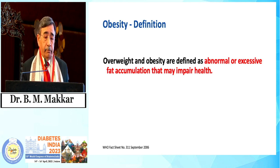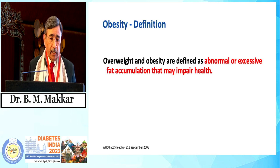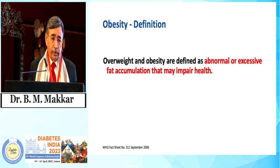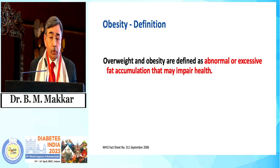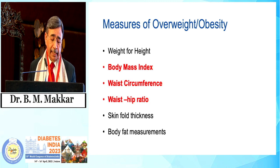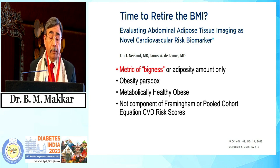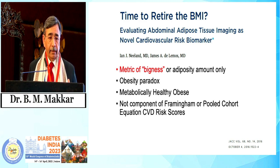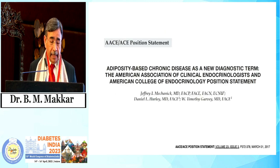Obesity is basically looked upon as increased body weight, but it is defined as abnormal excessive accumulation of fat in the body to an extent that it impairs health. So it is fat accumulation — it is not just body weight. We are measuring body mass index and body weight, and these are usually surrogate measures which are looking at fat. But BMI, by definition, is a metric of bigness — the total amount of weight — which is an indirect measure of fat. So it is an imprecise term.